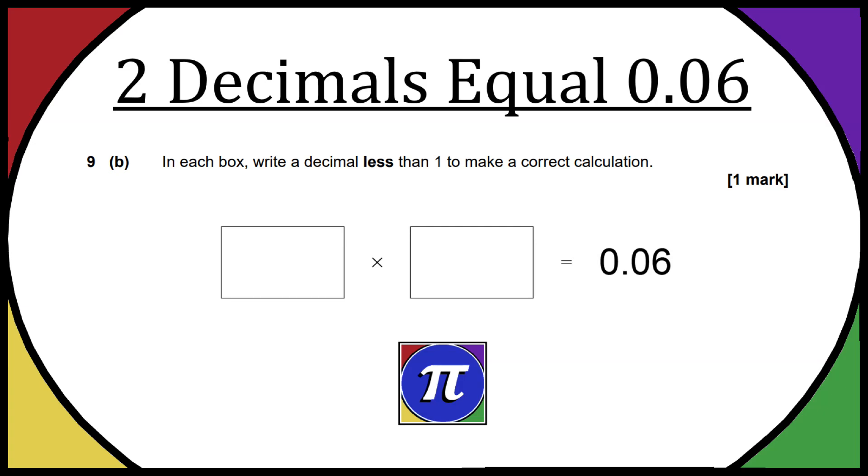So question 9b of the past paper, we need to multiply two decimals to equal 0.06.